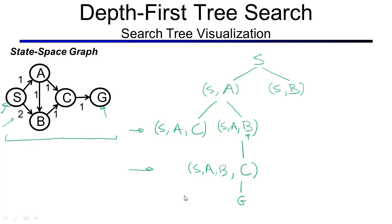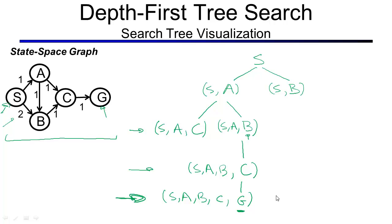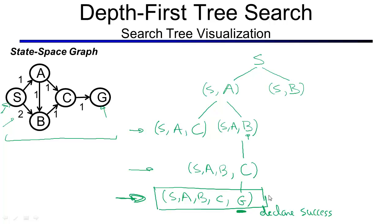This is not just G in the search tree — it is really the plan to start in S, go to A, go to B, go to C, and then go to G. The deepest node in the search tree is this node. When expanding it, we see that the last state in this plan is the goal state, which means we declare success. The path found is S, A, B, C, G.